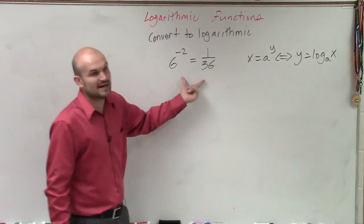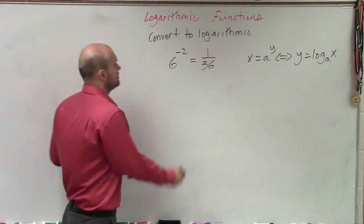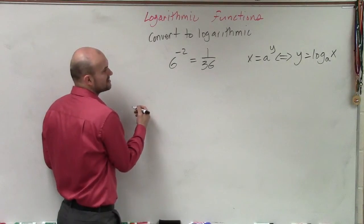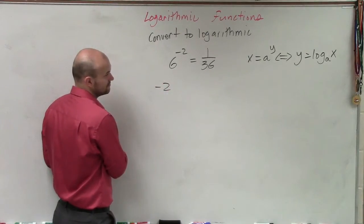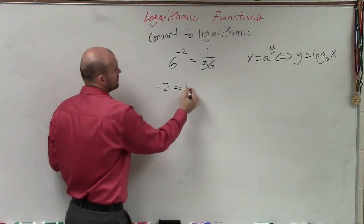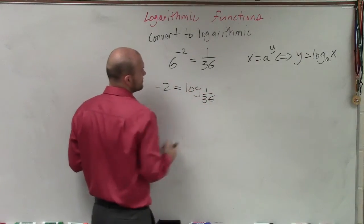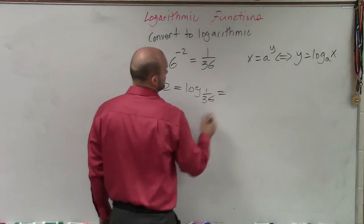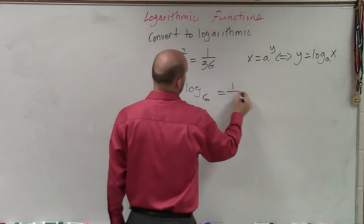So if I give you something in exponential form and I ask you to write it in logarithmic, all we're simply doing is just rewriting them in their form. So it's going to be negative 2 equals log base 6 of 1 over 36.